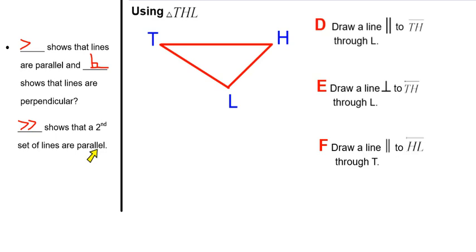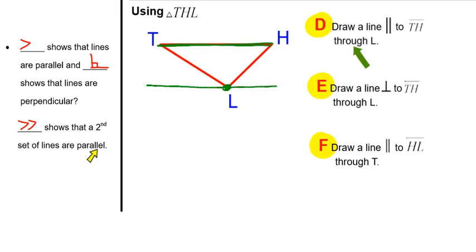We're going to do three things to triangle THL: draw a parallel, draw a perpendicular, and draw a second parallel. The first instruction says to draw a line parallel to TH through L. TH is on top, L is on the bottom. The only option is to run a line along the bottom of the picture through point L. Draw the line and put your arrows on it to show that they are parallel.